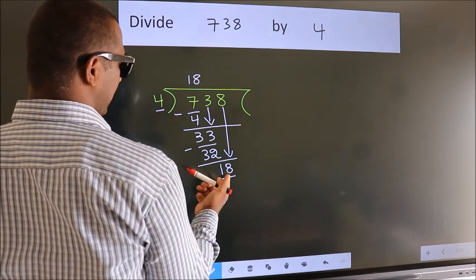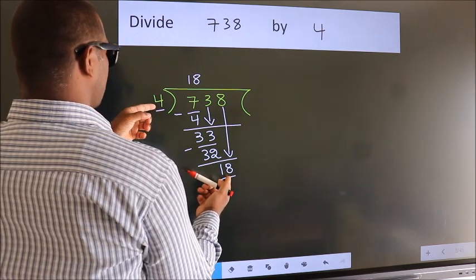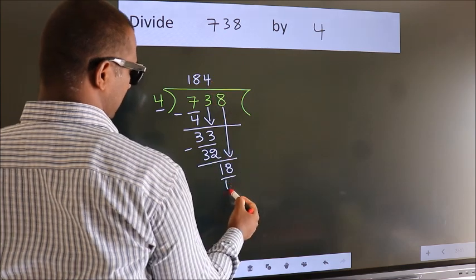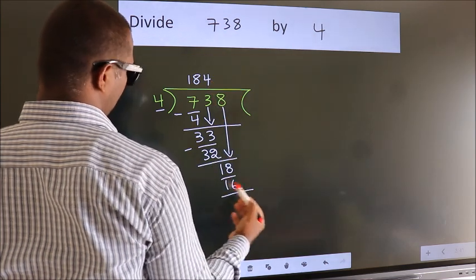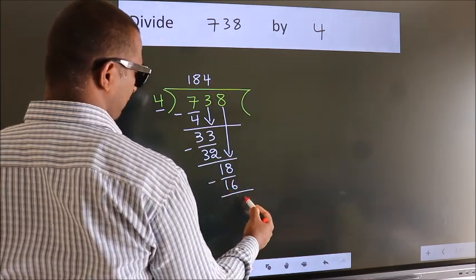A number close to 18 in the 4 table is 4 fours are 16. Now we subtract and get 2.